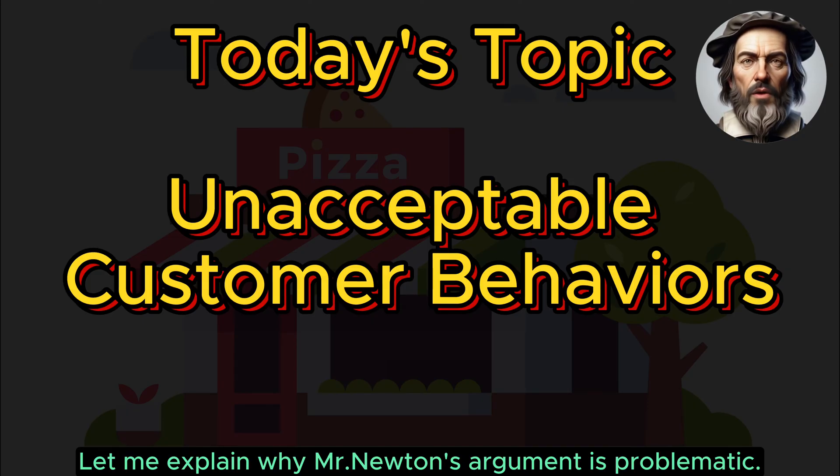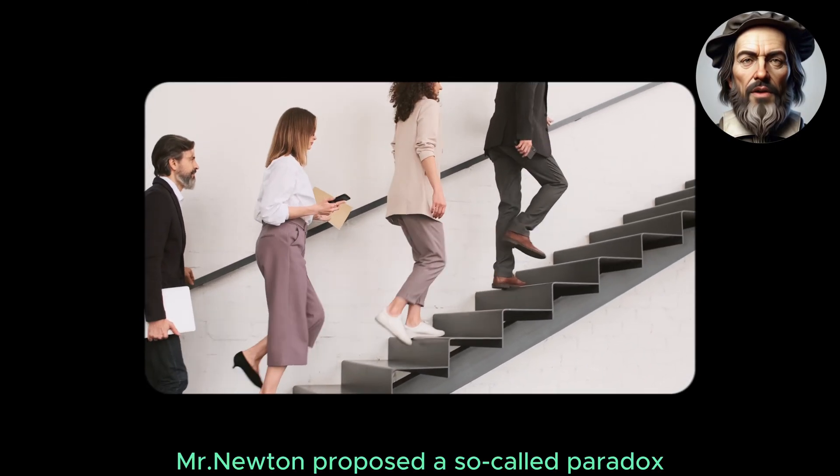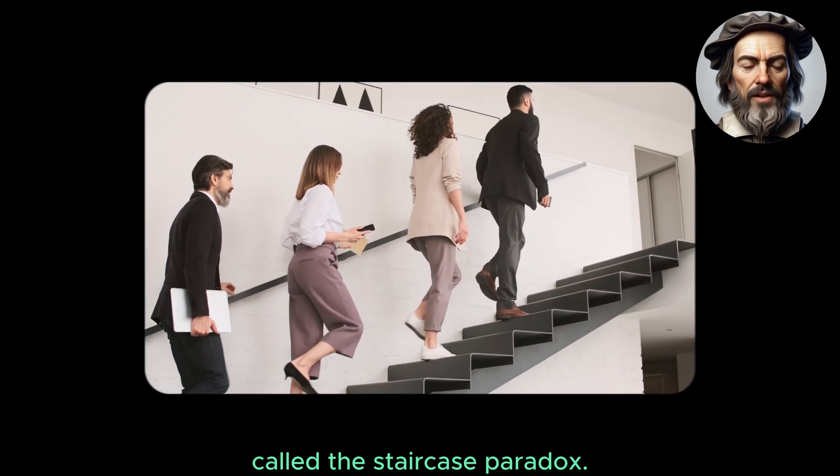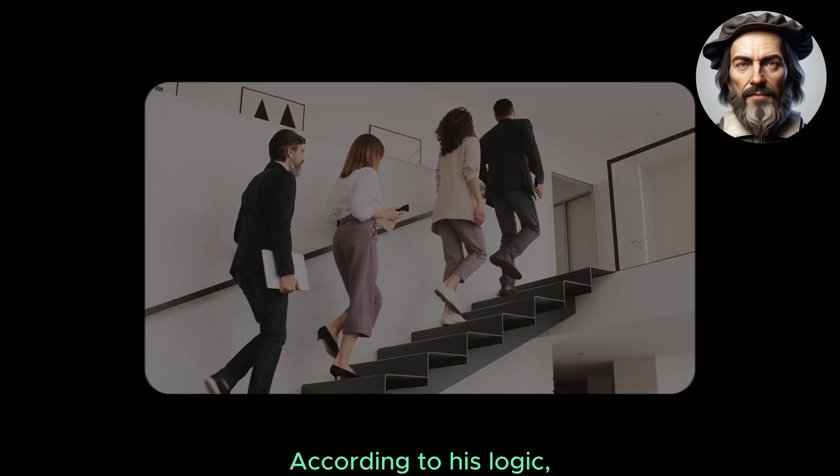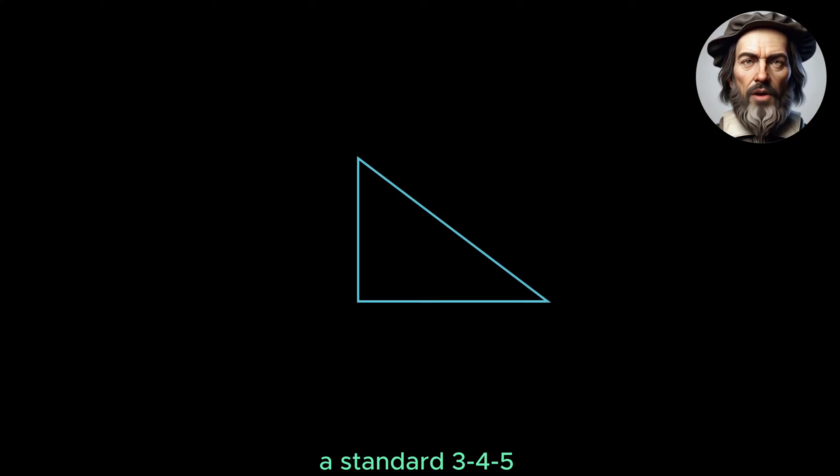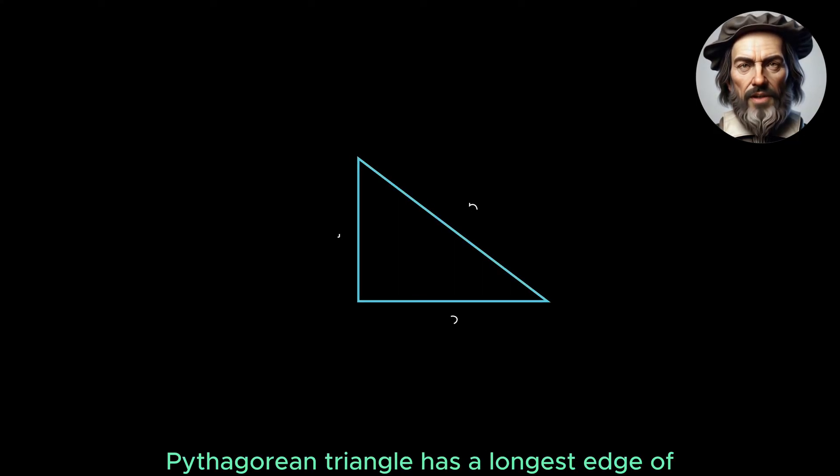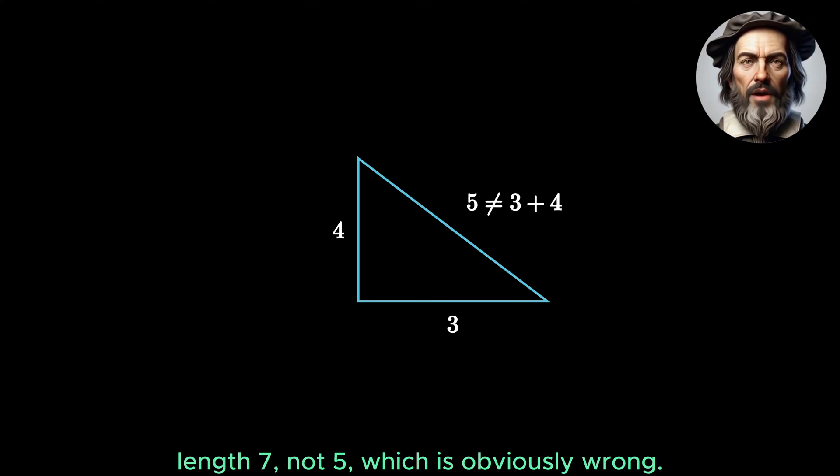Let me explain why Mr. Newton's argument is problematic. Mr. Newton proposed a so-called paradox called the staircase paradox. According to his logic, a standard 345 Pythagorean triangle has a longest edge of length 7, not 5, which is obviously wrong.